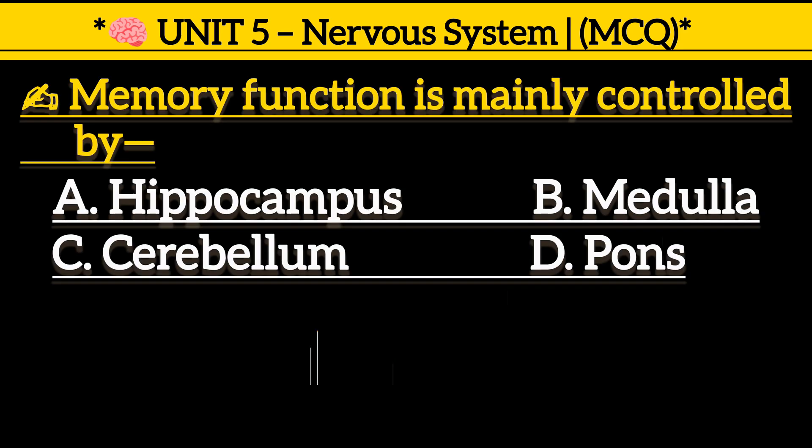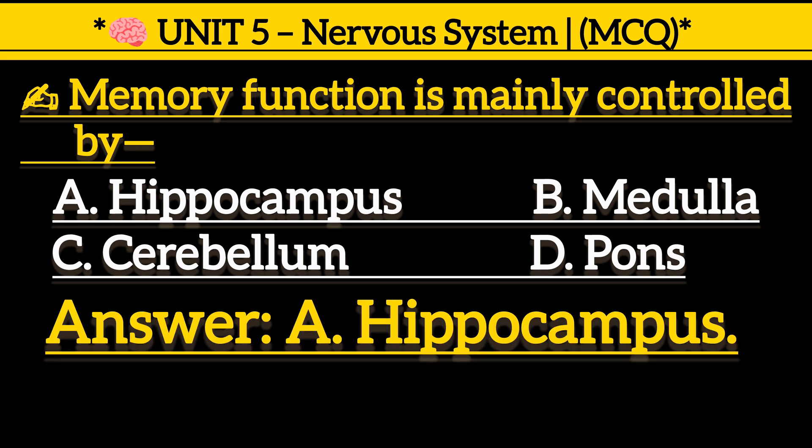Memory function is mainly controlled by: Option A, hippocampus. Option B, medulla. Option C, cerebrum. Option D, pons. Correct answer is Option A, hippocampus.